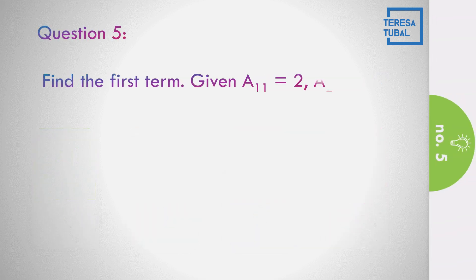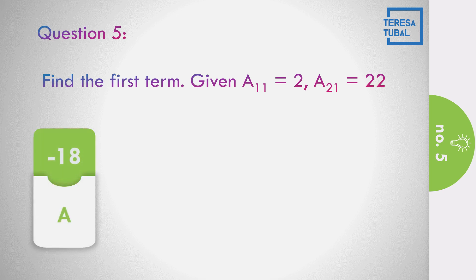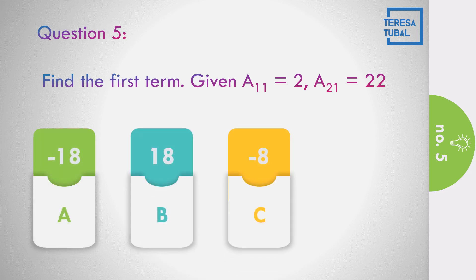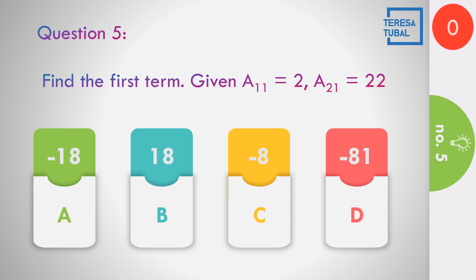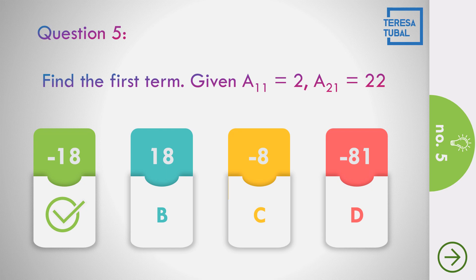Question number 5: Find the first term given that the eleventh term is 2 and the twenty-first term is 22. Options: a) negative 18, b) 18, c) negative 8, d) negative 81. Time's up. The answer is equal to negative 18.